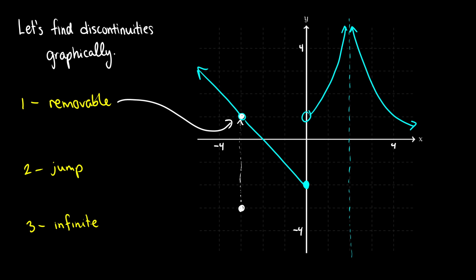A jump discontinuity is exactly what it sounds like. If you have a curve that at one point jumps up and the curve continues at some other point, then you're looking at a jump discontinuity. These are really easy to see graphically, but if you're just looking at a function without a graph, it can be harder to tell if it's a jump or something else.